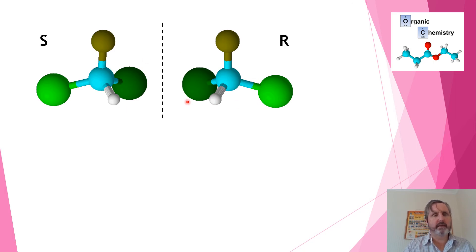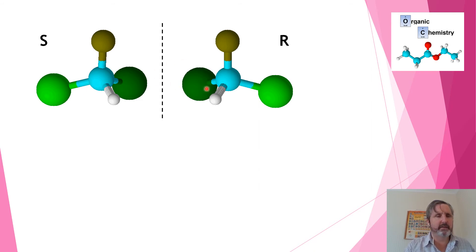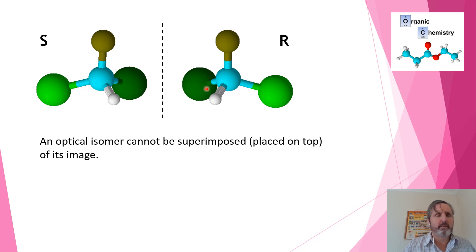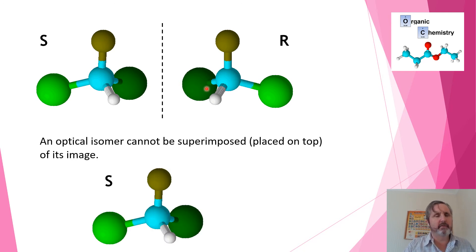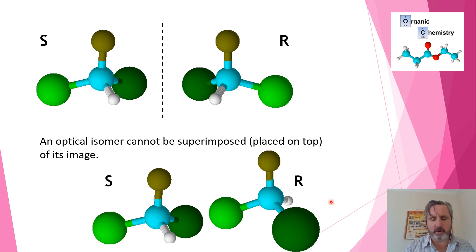Here's an example using an atom model. We've got our different groups represented with different colours and different sized spheres. You can see this is a mirror image of this one — it looks exactly the same. We've got an S and an R image here. We can't put them on top of each other, and that is what makes them optical isomers. When I take the S one and try to put the R one in the same place — putting the brown group at the top, the light green group here, and the blue one — as soon as I do that, these two groups are on opposite sides; they cannot take up the same space. So they are optical isomers.